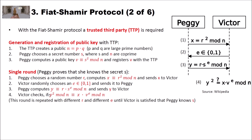In a single round of the protocol: first, Peggy chooses a random number r and computes x, which is r squared modulo n, and sends this x to Victor. Then Victor randomly chooses an e, which is either 0 or 1, and sends it to Peggy. Peggy then computes y, which is the product of her random number r times her secret s to the power of e modulo n, and sends this y to Victor.